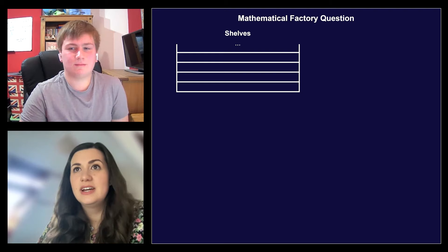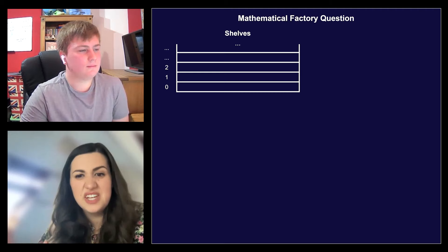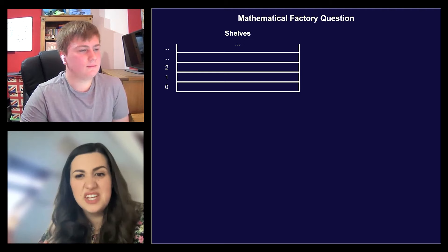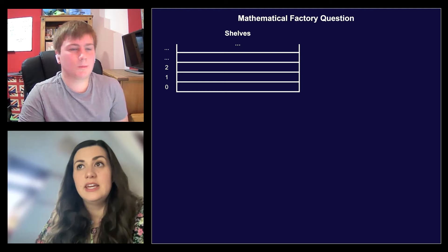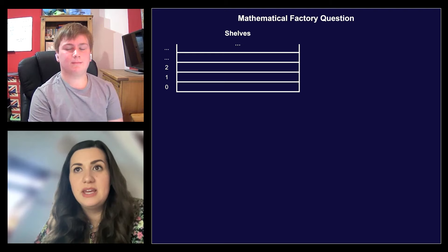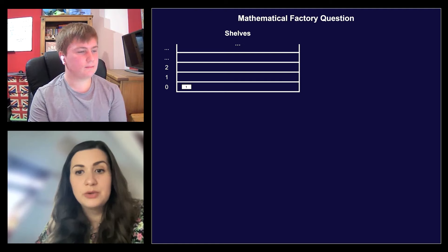Thank you. So for this question, Tom, you need to imagine you're in a factory and you're in charge of automating processes in this factory. The factory is a bit strange. It has some shelves which are numbered, so we can refer to them — shelf zero, shelf one, shelf two, and so on. There's an infinite number of shelves, so you don't have to worry about that. Each shelf can hold zero or more boxes. And initially, all of the shelves are empty. Each box contains an integer.